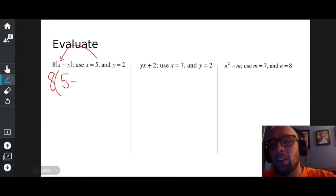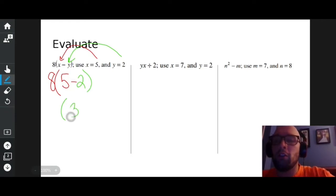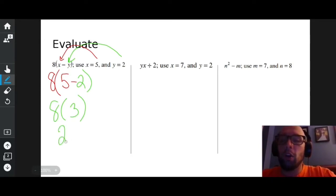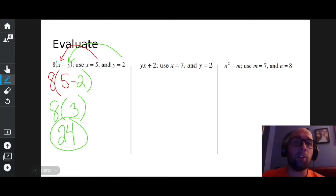PEMDAS says do everything inside the parentheses first. So five minus two is three. Drop down the eight. Eight times three is 24. That's how many hours are in a day.